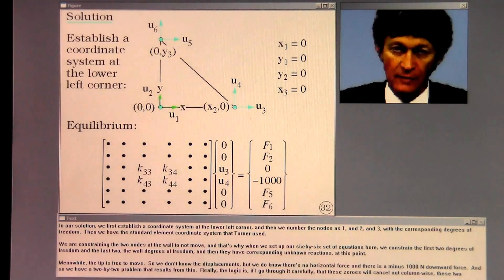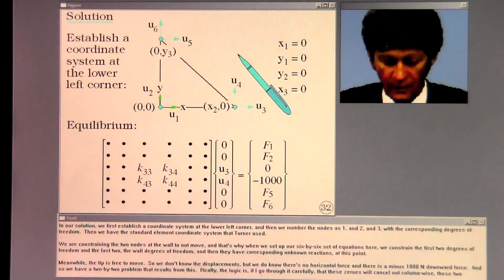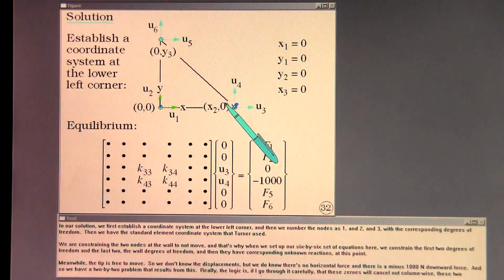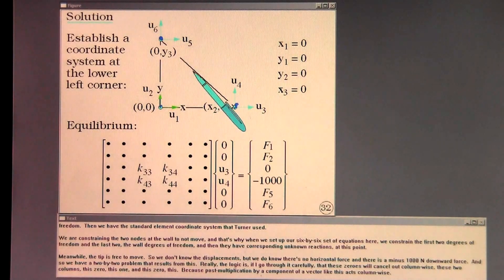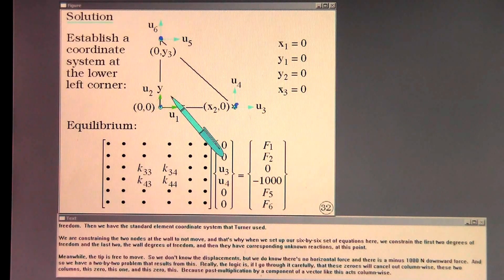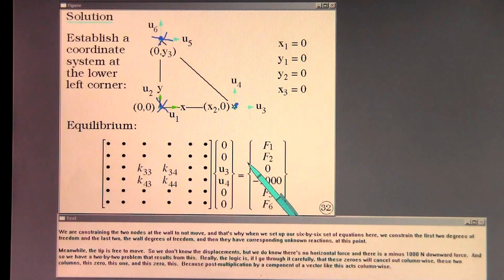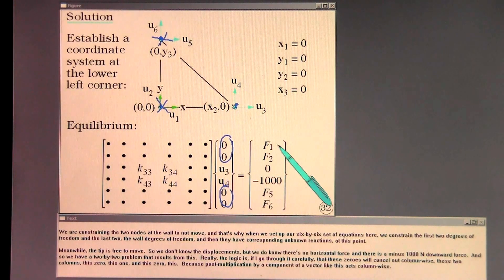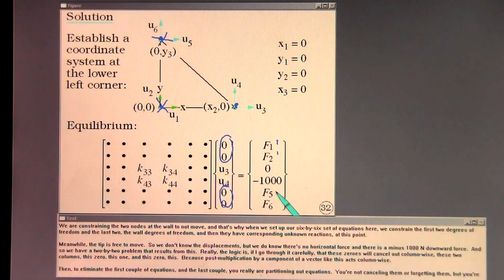In our solution we first establish a coordinate system at the lower left corner. Then we number the nodes as one, two, and three with the corresponding degrees of freedom. We have the standard element coordinate system that Turner used. We are constraining the two nodes at the wall to not move, and that's why when we set up our six by six set of equations, we constrain the first two degrees of freedom and the last two — the wall degrees of freedom. They have corresponding unknown reactions at this point.